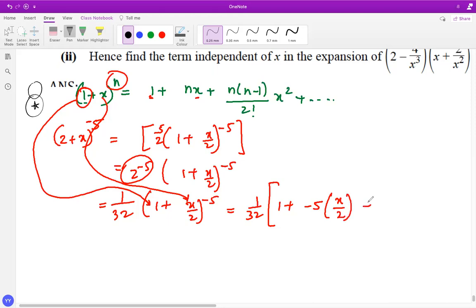Plus -5 times -6 over 2! which is 2, times (x/2)². And next term will be -5 times -6 times -7 over 3! which is 6, times (x/2)³ and so on.